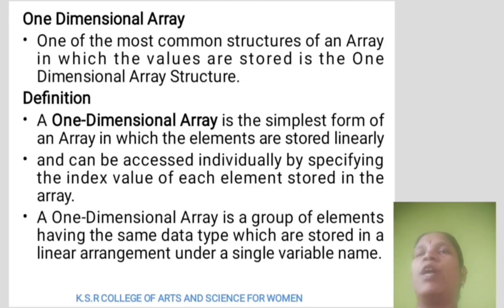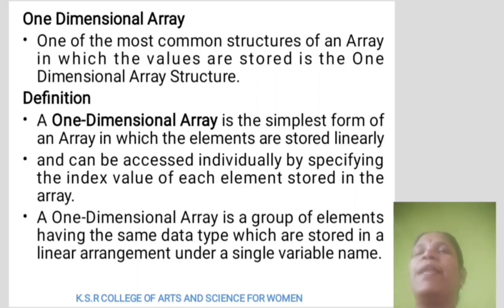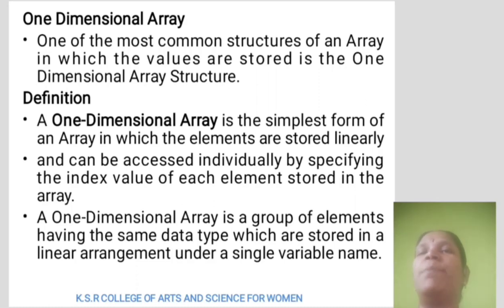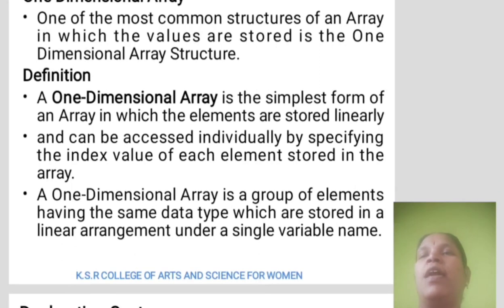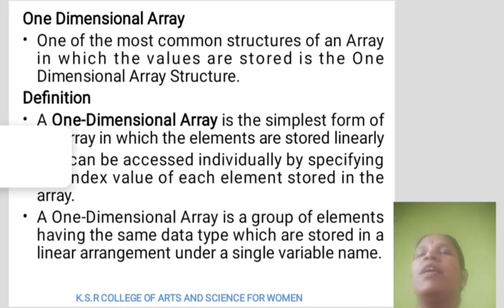One-dimensional array. One of the most common structures of array in which the values are stored in a one-dimensional array structure. A one-dimensional array is the simplest form of an array in which the elements are stored linearly and can be accessed individually by specifying the index value of each element stored in the array. A one-dimensional array is a group of elements having the same data type which are stored in a linear arrangement under a single variable name.